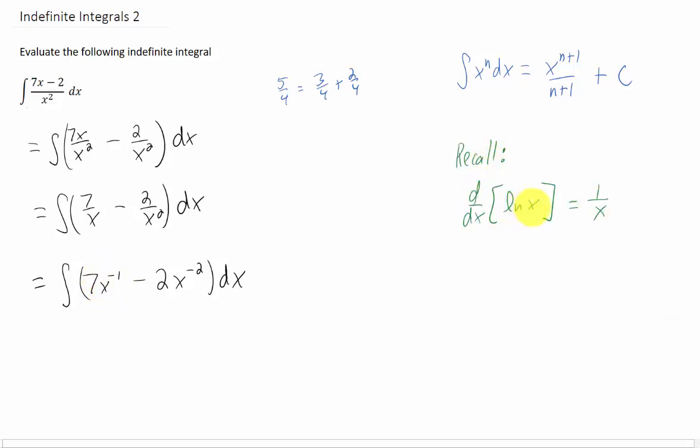So we need to recall that the derivative of a natural log of a function is 1 over x, and that tells us that the integral of 1 over x is the natural log of x.